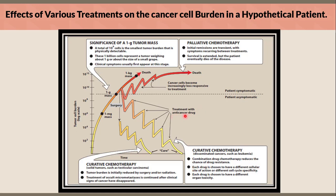The other option is palliative chemotherapy, where initial remissions are transient, with symptoms recurring between treatments. Survival is extended but the patient eventually dies of the disease, as cancer cells become increasingly less responsive to treatment. It is important to note that below the one gram mass — or 10 to the power of 9 cells — the patient is asymptomatic, and symptoms begin at the one gram mass threshold.